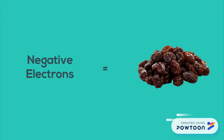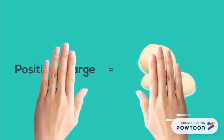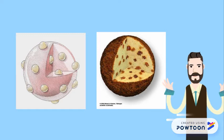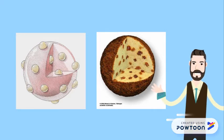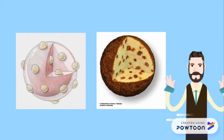The negative electrons represented the raisins in the pudding, and the dough contained the positive charge. Here is an image of plum pudding and the plum pudding model that J.J. Thomson created.